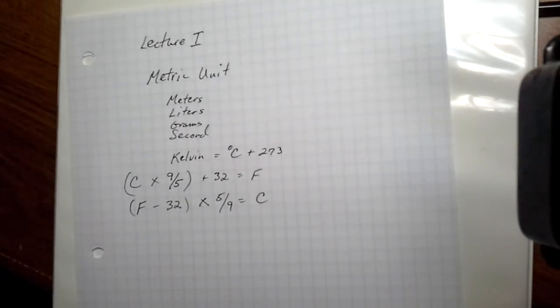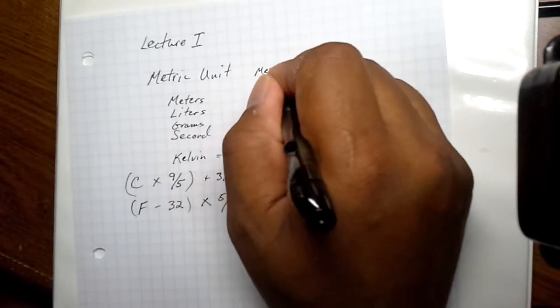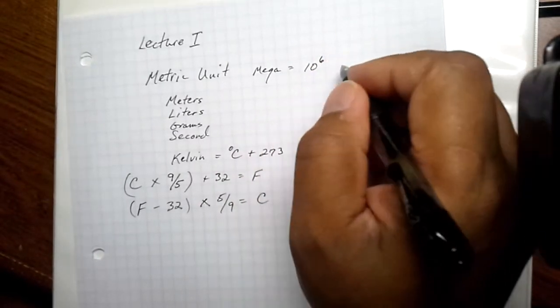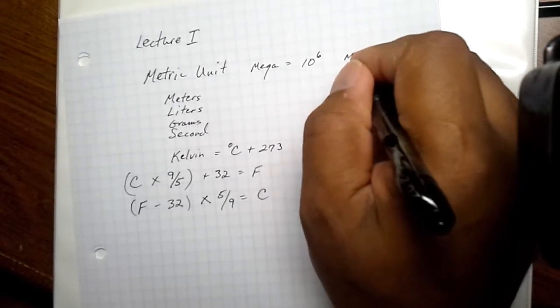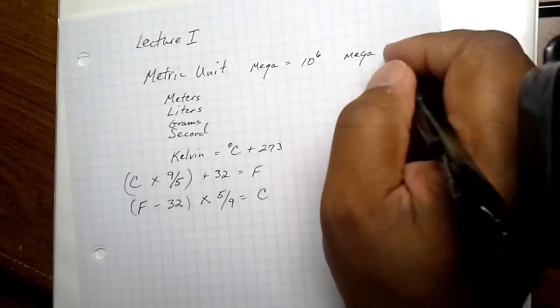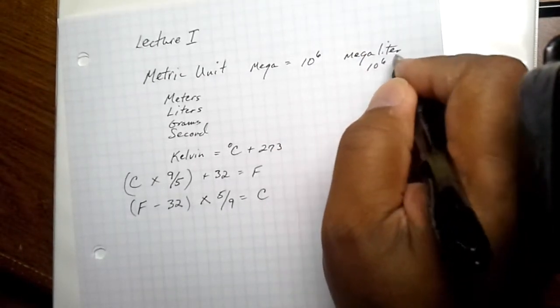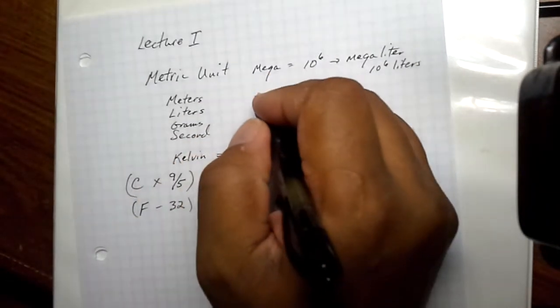The metric units of measurement usually are preceded by very common prefixes. For instance, mega, not very often used, but it refers to 10 to the 6th or a million. So if I say megaliter, I'm saying I have 1 million or 10 to the 6th liters. And that's how these prefixes are used.